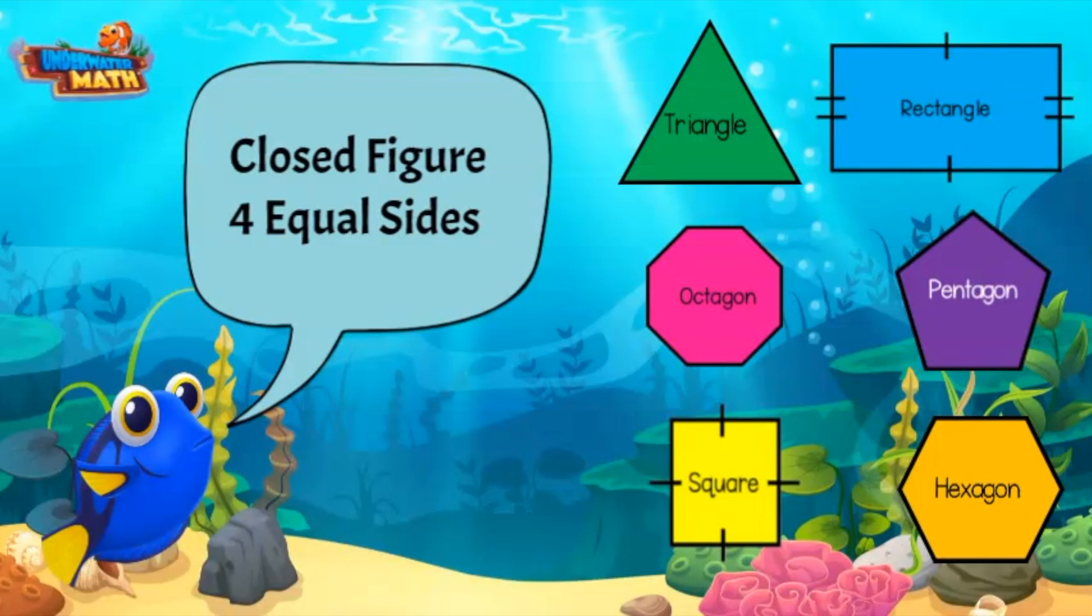I need to find another four-sided shape. Let's look at the square. This shape is closed. The lines tell me that all the sides are the same length. The shape I am thinking of is a square.